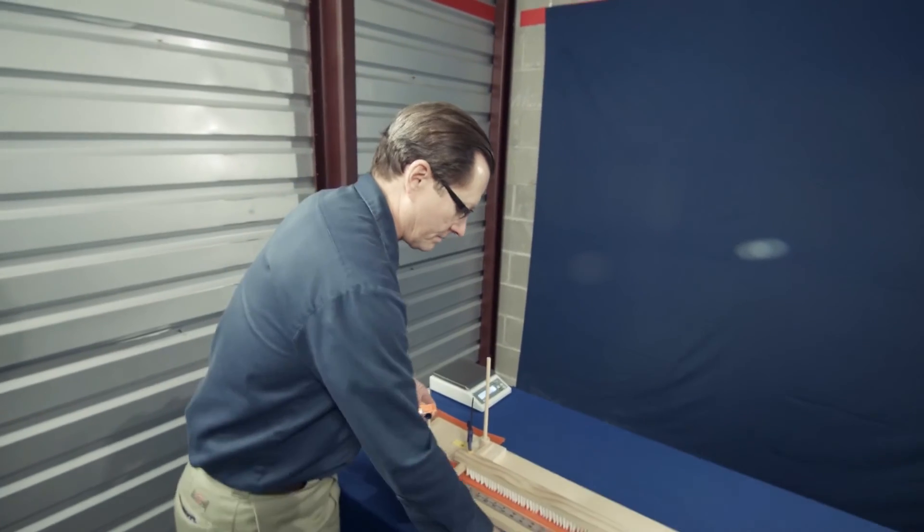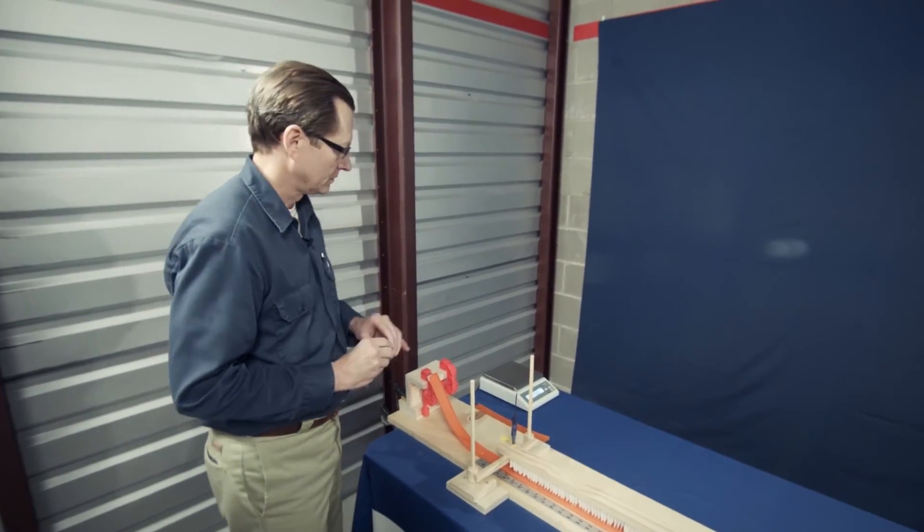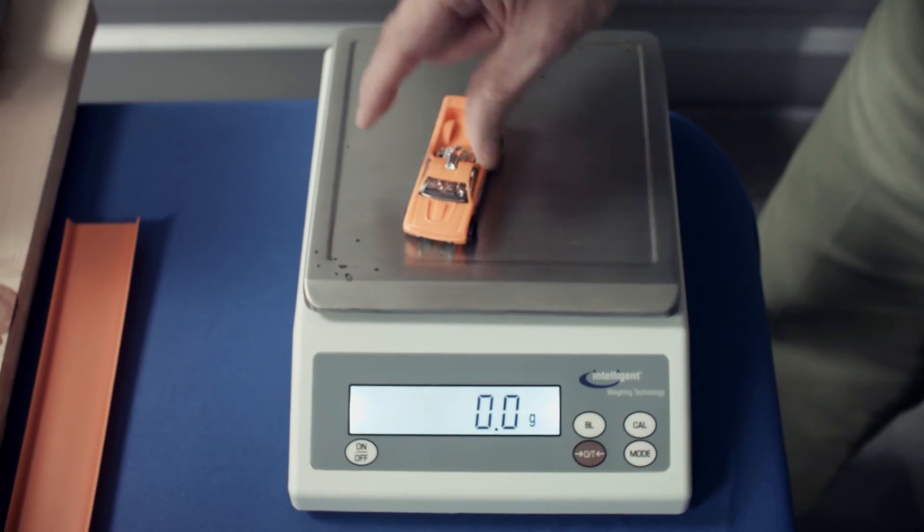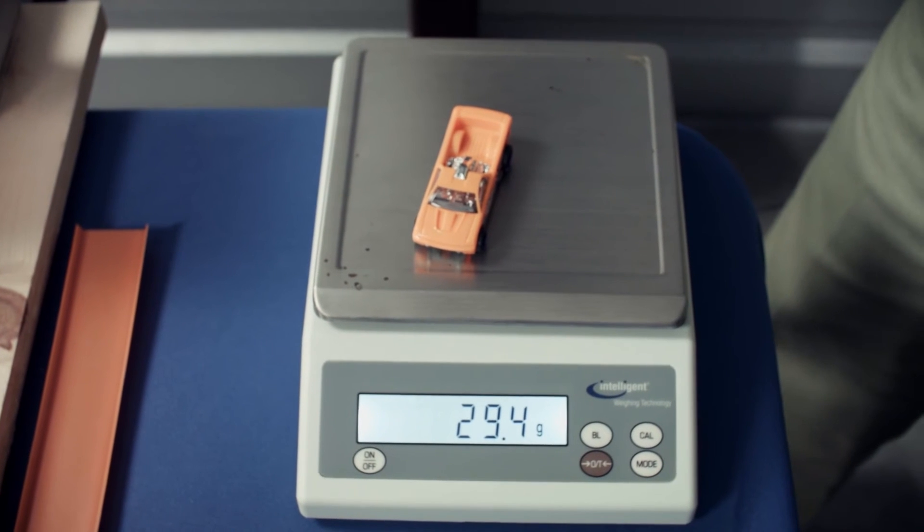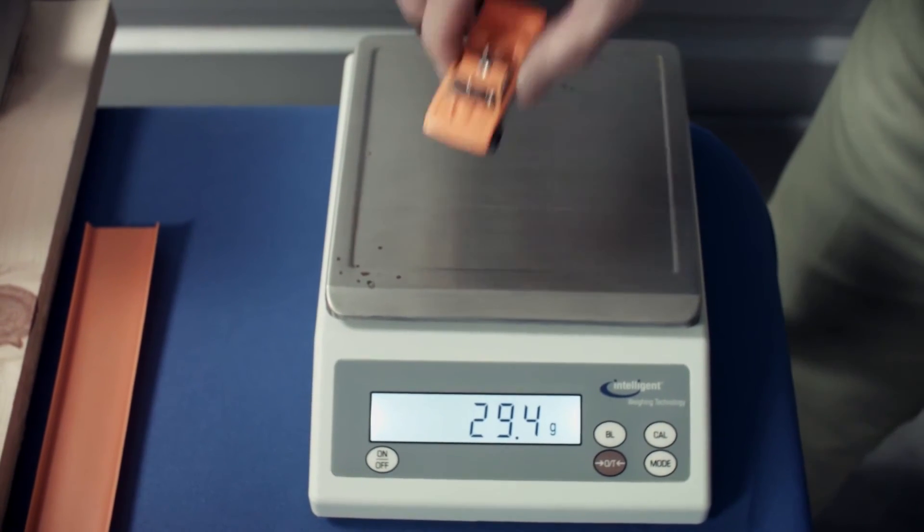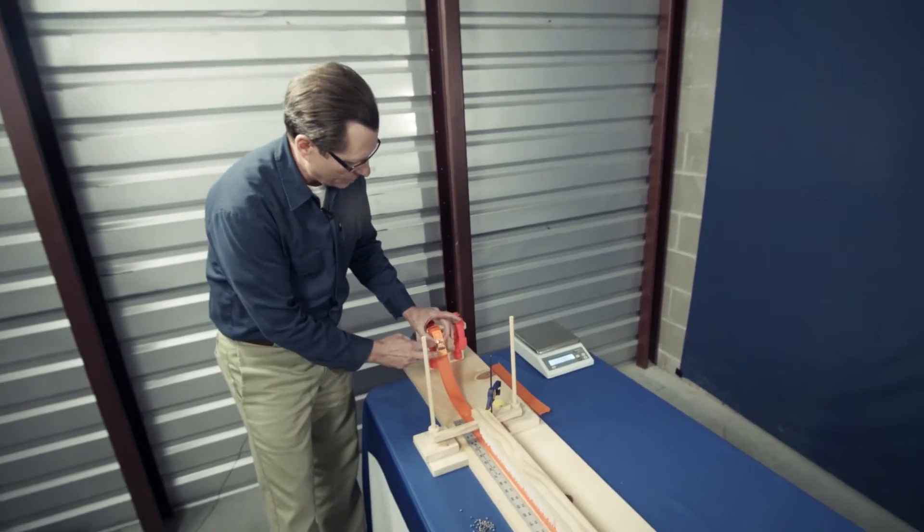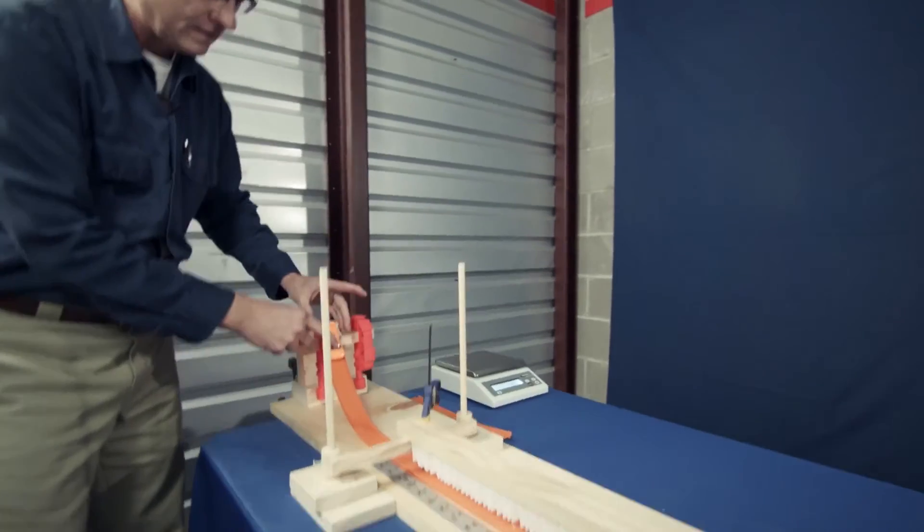So now we'll start collecting the data. We'll begin with the empty car. First, we mass the car on the mass balance. This car weighs 29.4 grams. Record that mass in the lab journal. And now we're ready to go with the first set of trials. So we take the car, back it up to the starting gate, release it.